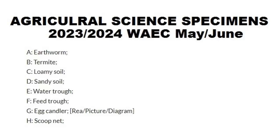The water drawer is what they use in poultry farms — what they put water in and give to chickens to drink. Specimen F is feeder, which is also something used in poultry where you put food and the chicken eats from it.